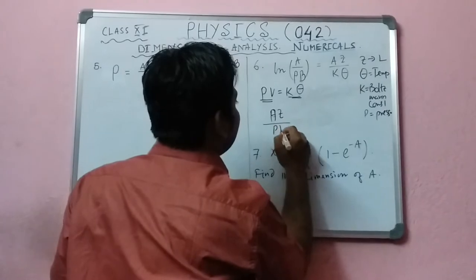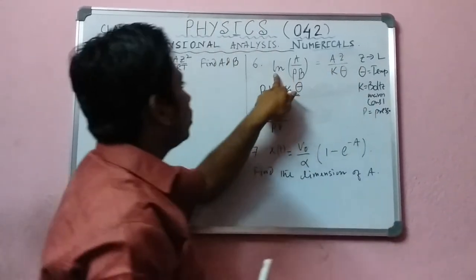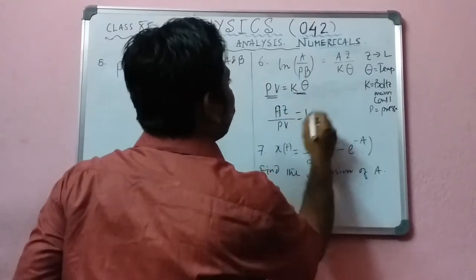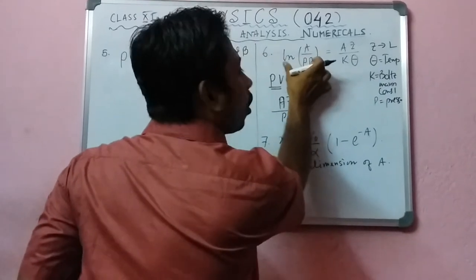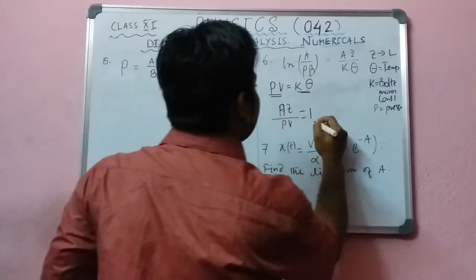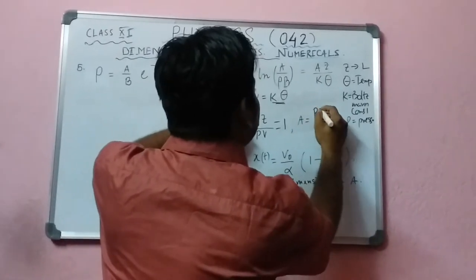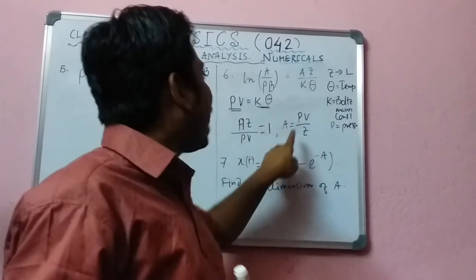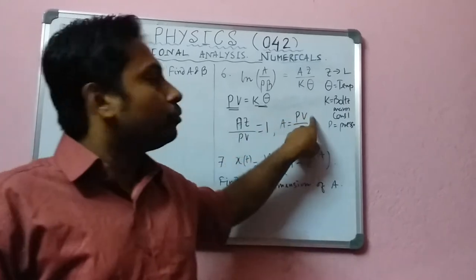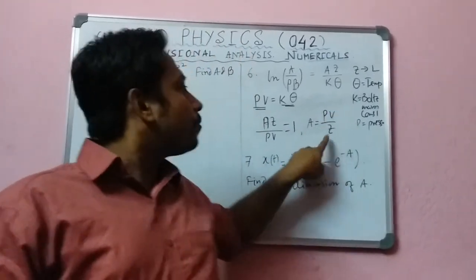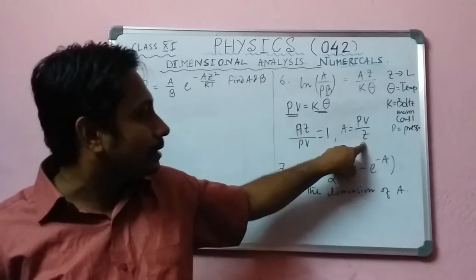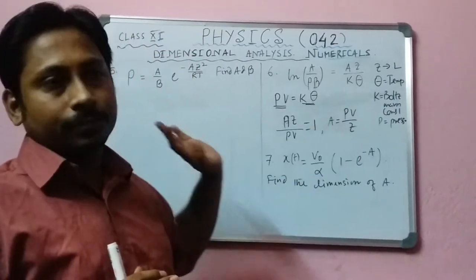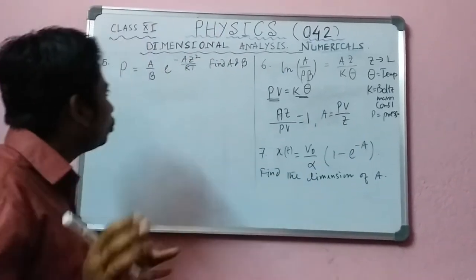We can write a·z divided by p·V equals one — no dimension — so a equals p·V divided by z. Now put in the dimensions: pressure is F/A, volume is L³, and z is length L. You can find the dimension of a yourself. Please pause the video and try numerical number five.